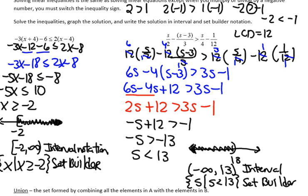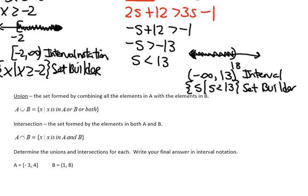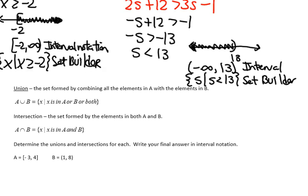The other topic in this video is unions and intersections. The union is the set formed by combining all the elements in A with the elements in B, meaning an element can be in set A, in set B, or in both. Drawing a Venn diagram, the union of A and B includes everything shaded — I can be in A, I can be in B, or I can be in both.